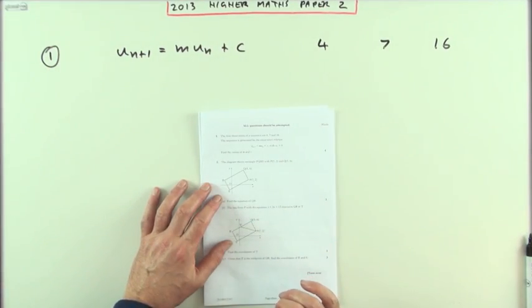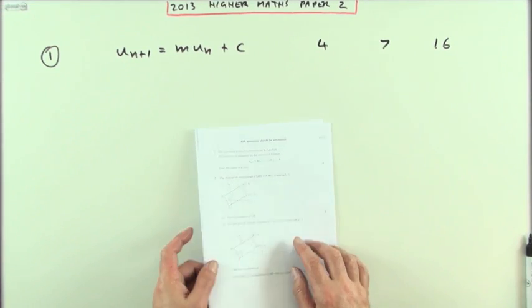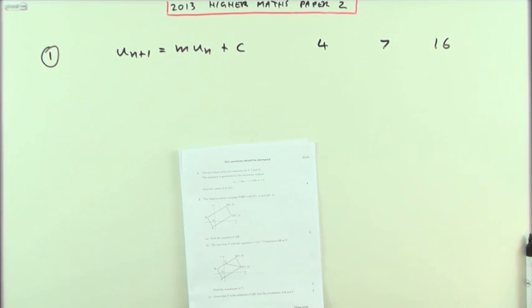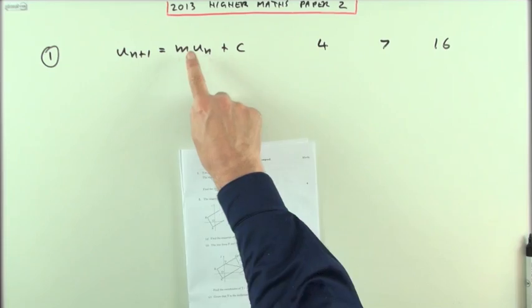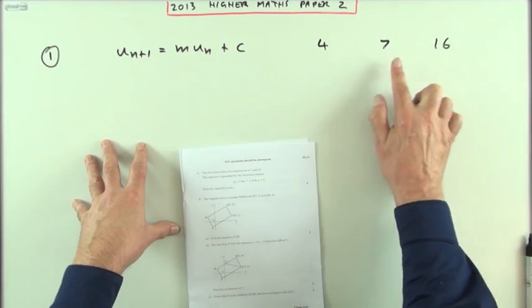Question 1 from the 2013 Higher Maths Paper 2, recurrence relations. There's that simultaneous equation one. It doesn't tell you the parameters in the recurrence relation, the multiplying number or the number you add, but it gives you the first three terms.